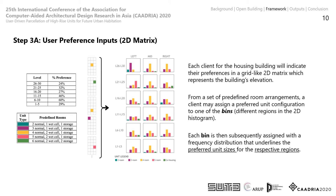Coming to the user preference inputs: the type of units that the user can select from is determined in terms of the number of each room type specified earlier. On top of this, the user can select the general level and wing position of the unit that they want to stay at. We then consolidate all this information in a 2D matrix that will be passed into the algorithm for further processing.